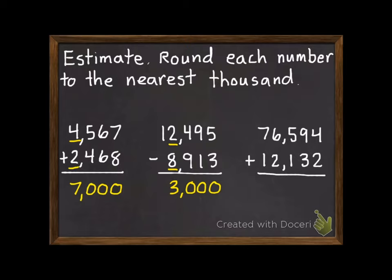And our third practice problem, our first number is going to round up to 77,000. Our second number will stay at 12,000. So 77,000 plus 12,000 equals 89,000.